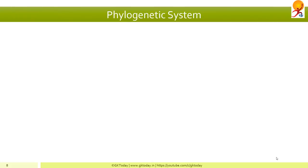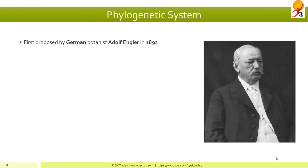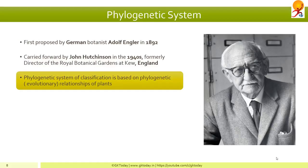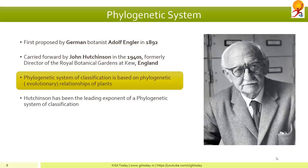Next, we come to the phylogenetic system. This is the latest and was proposed by German botanist Adolf Engler in 1892. However, it has been carried forward by John Hutchinson since the 1940s. He was the former director of Royal Botanical Gardens at Kew in England. Phylogenetics refers to the system of classification based on the evolutionary relationship of plants, and Hutchinson has been the leading exponent in this field.